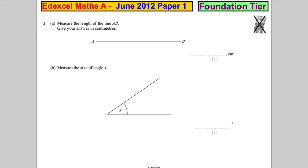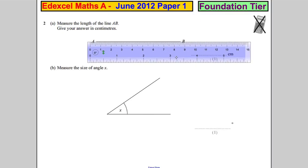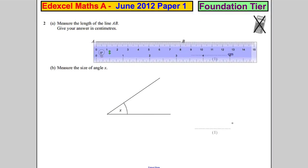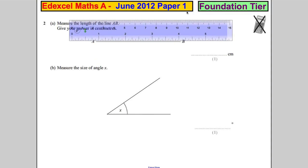We're asked to measure the length of line AB and give your answer in centimeters. So let's get the ruler and if we measure that, making sure we start at 0, it's about 8 centimeters.